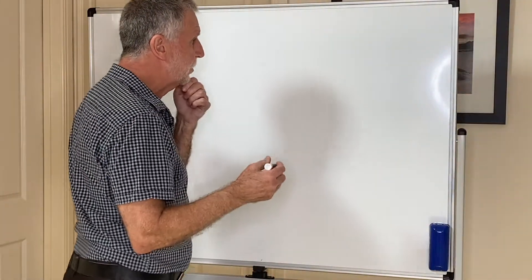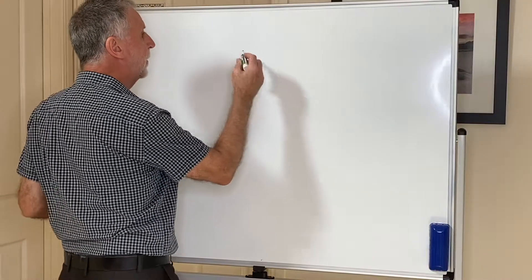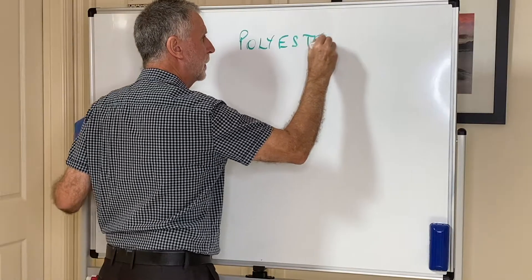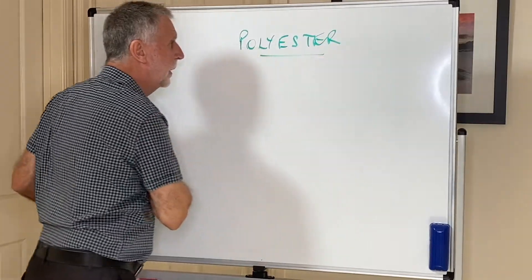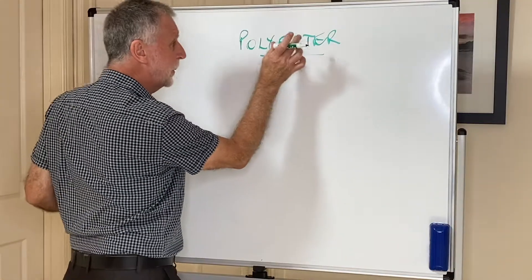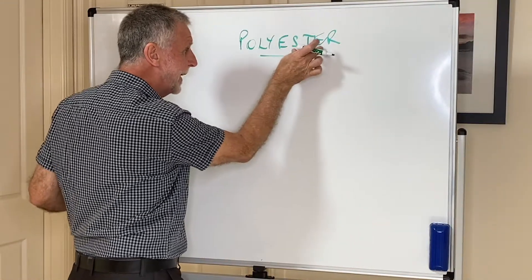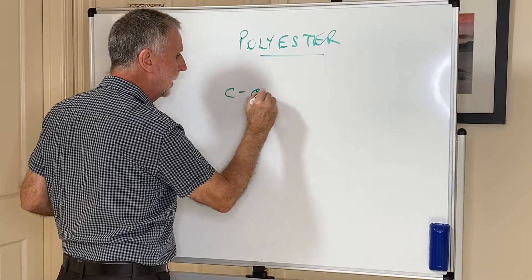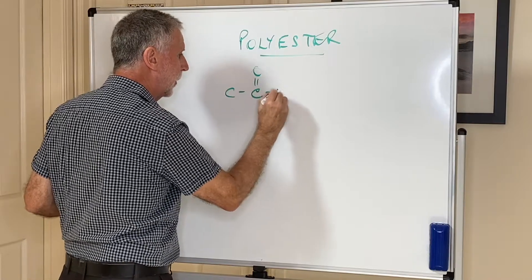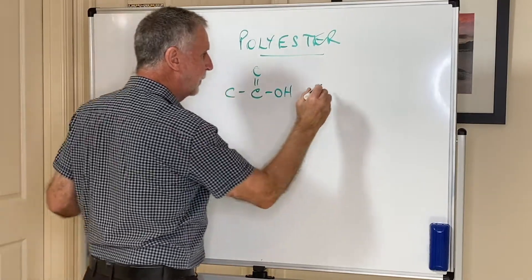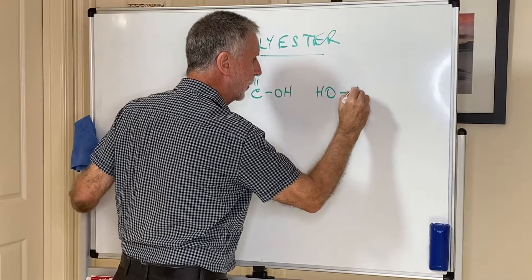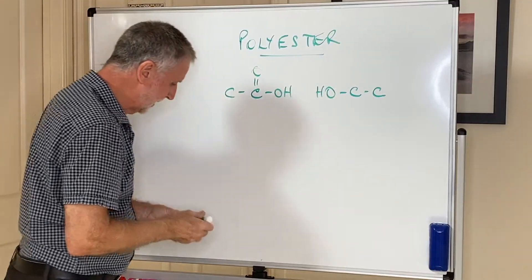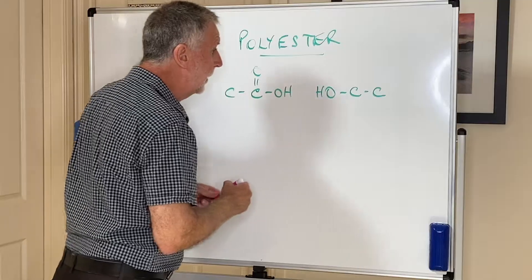There are two types of condensation polymer you need to be aware of. The first one we're going to look at are the polyesters. As the name suggests, the link between the monomers is an ester link. If I take a carboxylic acid — putting a COOH there — and an alcohol drawn the other way around, what we can do to form the ester link is to eliminate water.